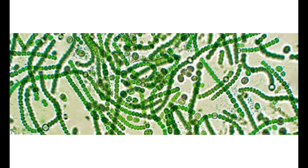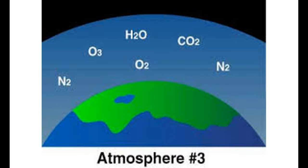Life begins as single cellular organisms in the water. Cyanobacteria photosynthesize with sunlight, water, and carbon dioxide, producing carbohydrates and oxygen, with which animals flourish. Excess oxygen accumulates in the atmosphere and interacts with ultraviolet radiation to form a protective ozone layer in the upper atmosphere.